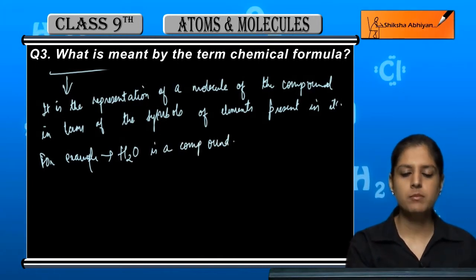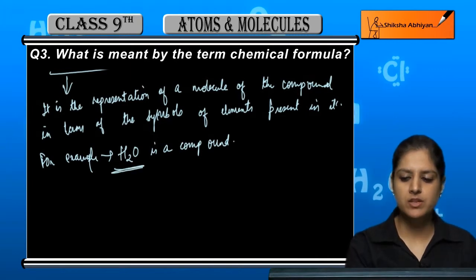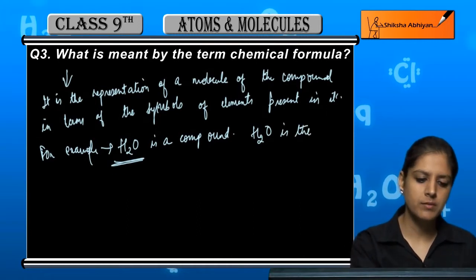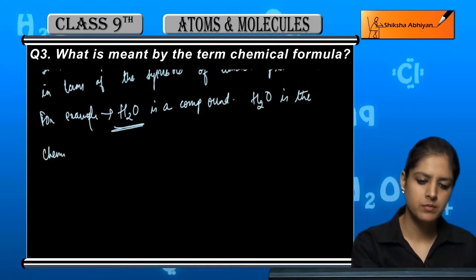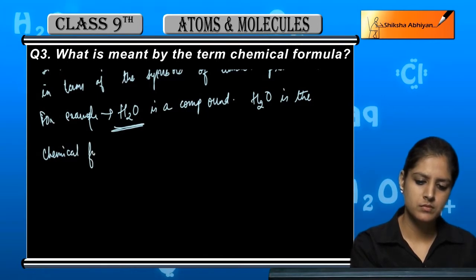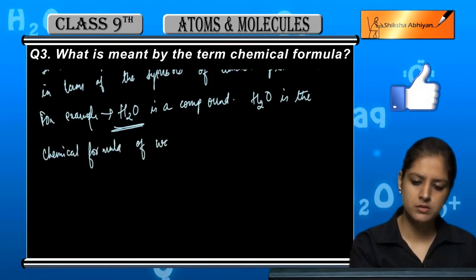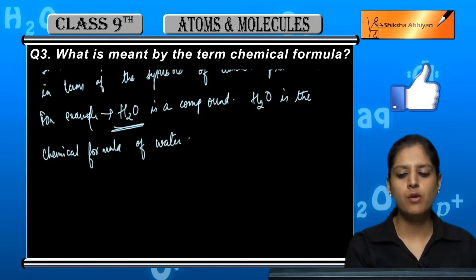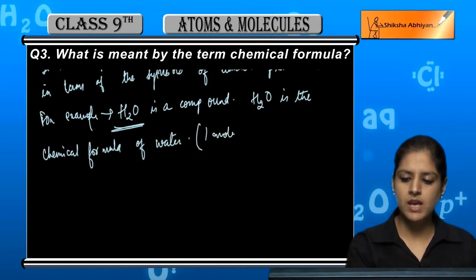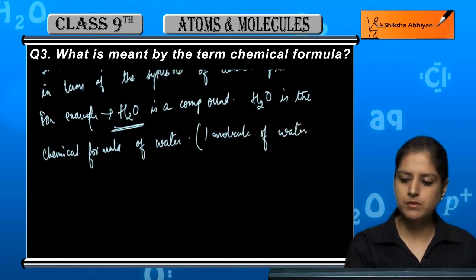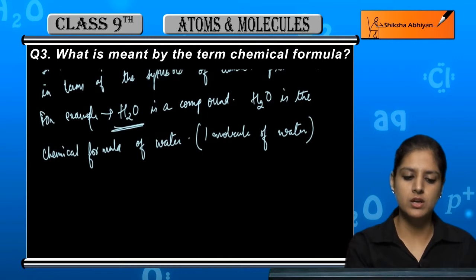Now this is a formula. The formula H2O is the chemical formula of water. If we are talking about water, we are talking about one molecule. That means it is the chemical formula of one molecule of water.